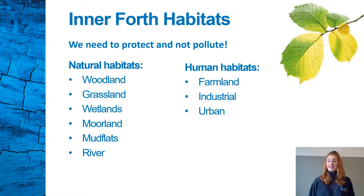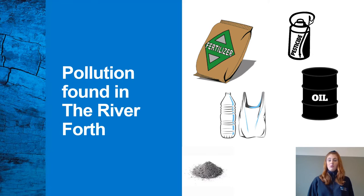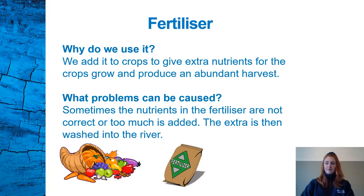Pollution comes from human activity in places such as farmlands, industrial and urban areas. The natural habitats are really important to protect. The types of pollution we're going to be looking at today, which can be found in the River Forth, are fertilisers, pesticides, oil, ash and plastic.